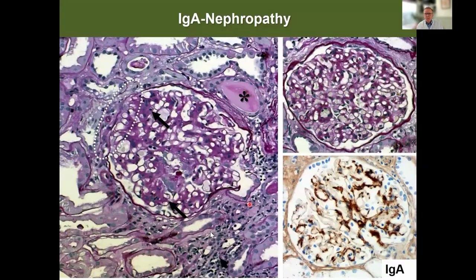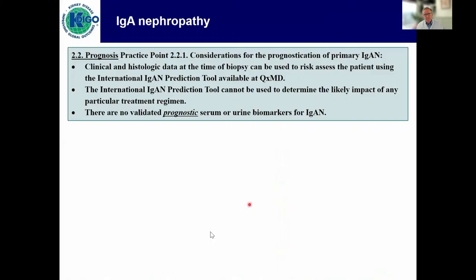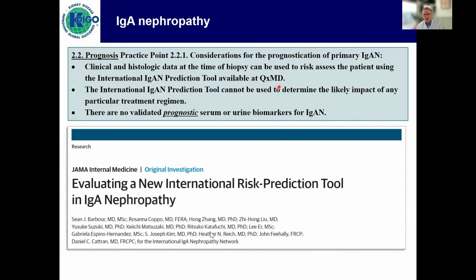Let's start with IgA nephropathy. This is what the guideline says in a practice point — considerations for prognostication. Clinical and histologic data at the time of biopsy can be used to assess risk using this risk prediction tool, published recently and freely available at the QXMD website. The important thing to stress: it's only currently for use at the time of the biopsy, it only predicts for the next six and a half years, and it cannot be used to determine the likely impact of any particular treatment.